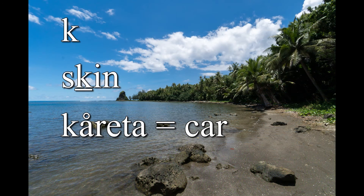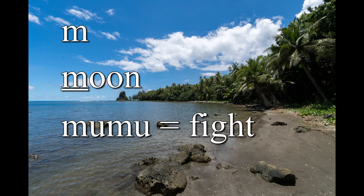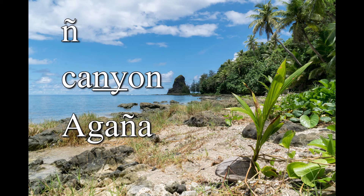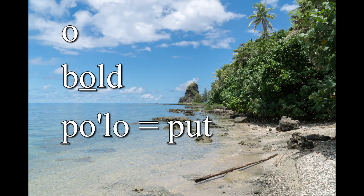K — 'skin' — kareta. L — 'land' — lassas. M — 'moon' — mumu. N — 'nani' — tano'. Ñ — 'canyon' — Agaña. NG — 'singing' — nganga'.